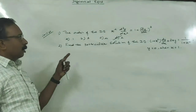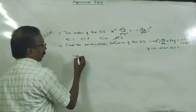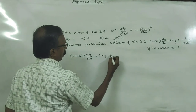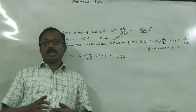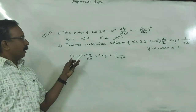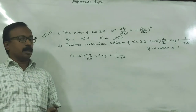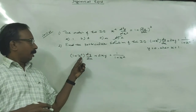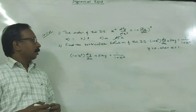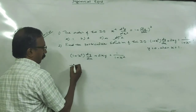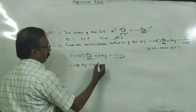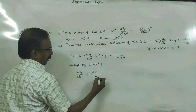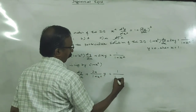The next question is also a linear differential equation: (1 + x²) dy/dx + 2xy = 1/(1 + x²). We should remember that the coefficient of dy/dx in a linear differential equation must be 1. So dividing by (1 + x²), we get dy/dx + [2x/(1 + x²)]y = 1/(1 + x²)².